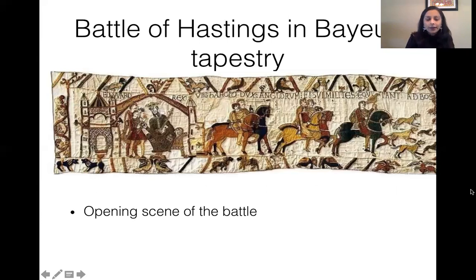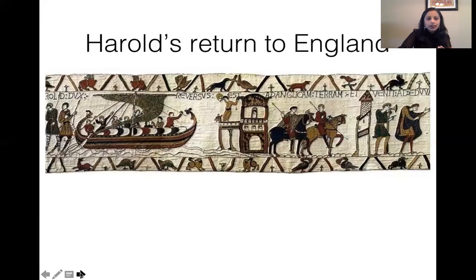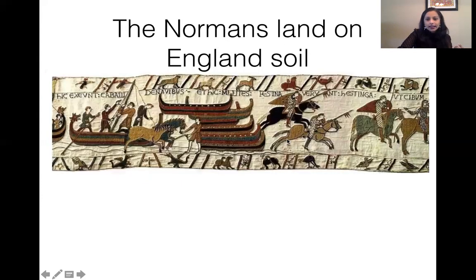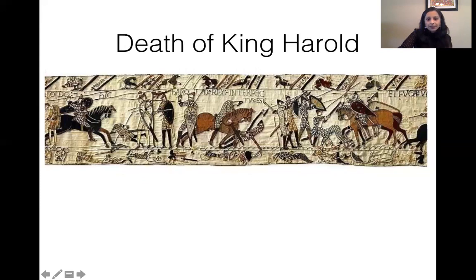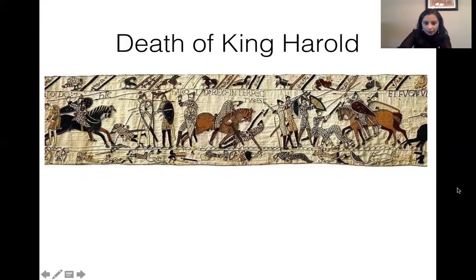Here is the Battle of Hastings depicted in the Bayeux Tapestry, which is in a museum currently. You can see Edward the Confessor — Rex, meaning king — and Harold, Anglorum, who was the king at that point. You see them setting up to go to England for battle, going by ship across the English Channel, reaching England, preparing for war, and fighting the soldiers of Harold. Harold dies — there may be one more piece of the Bayeux Tapestry not shown in the lecture slide.